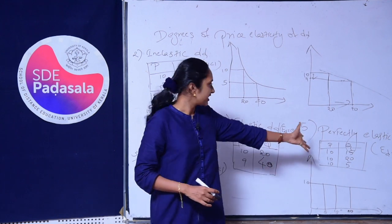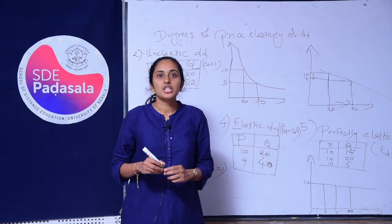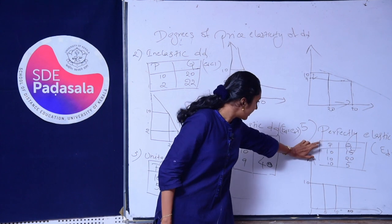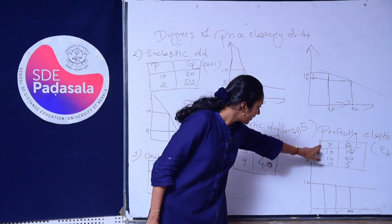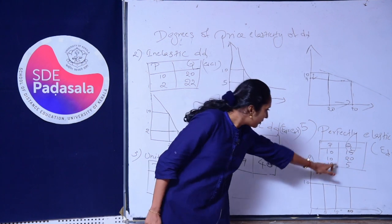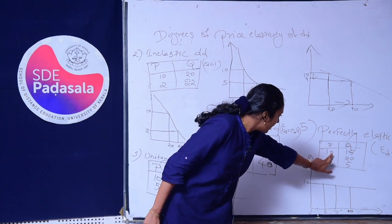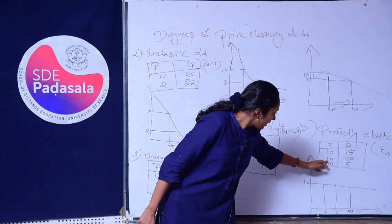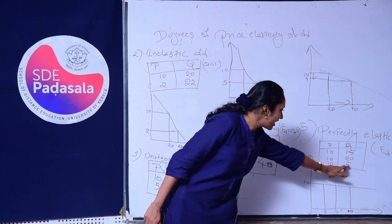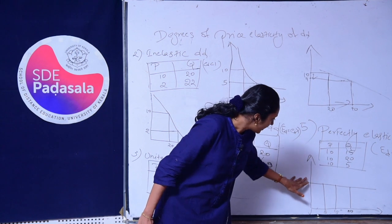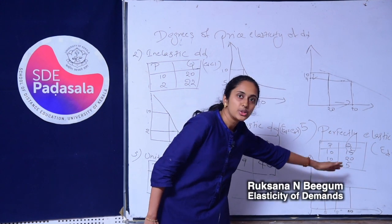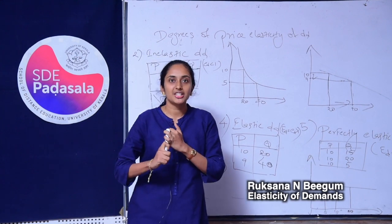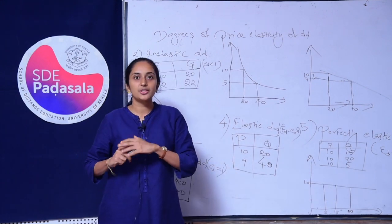The fifth degree is Perfectly Elastic Demand. Demand for a commodity is said to be perfectly elastic when there is an infinite change in quantity demanded without any change in price. For example, price remains constant at P, but quantity demanded changes — it increases or decreases. The demand curve for perfectly elastic demand is a horizontal line parallel to the X-axis. I hope you understood the differences between Price Elasticity, Income Elasticity, and Cross Elasticity of Demand, and all five degrees of Price Elasticity of Demand.